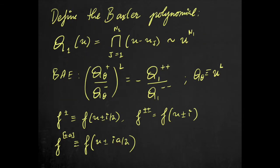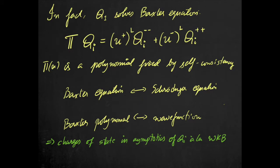We introduce the Baxter polynomial as a collection of the Bethe roots. One can rewrite the Bethe-Ansatz equations in terms of the Baxter polynomial in the following way. Also, please notice the new notation introduced. In fact, the Baxter polynomial is the solution of a second-order finite difference equation called the Baxter equation. It is the analog of the Schrödinger equation for integrable models. In this picture, the Baxter polynomial is analogous to the wave function and indeed, the charges of the state it describes are contained in its asymptotics.